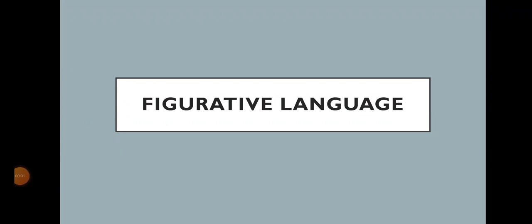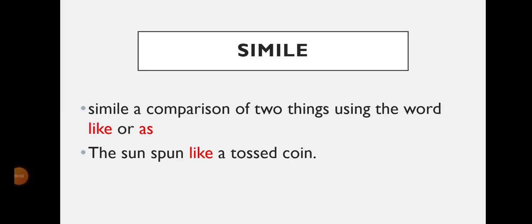Figurative language. Simile: a comparison of two things using the word 'like' or 'as.' For example, the sun spun like a toast coin.